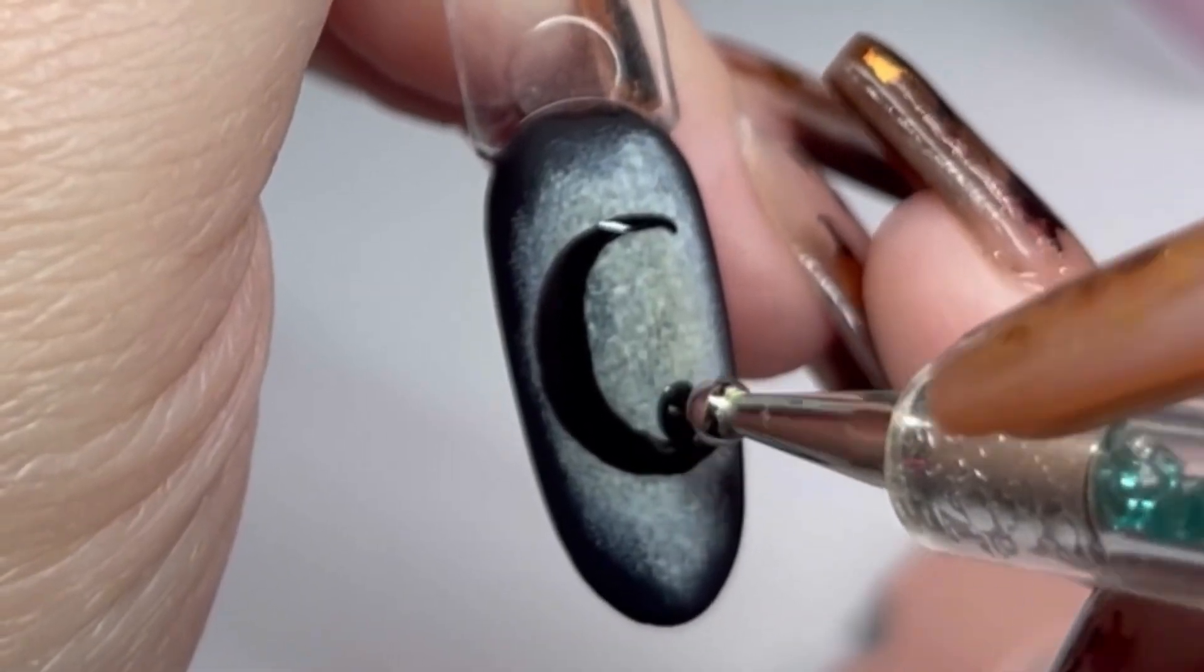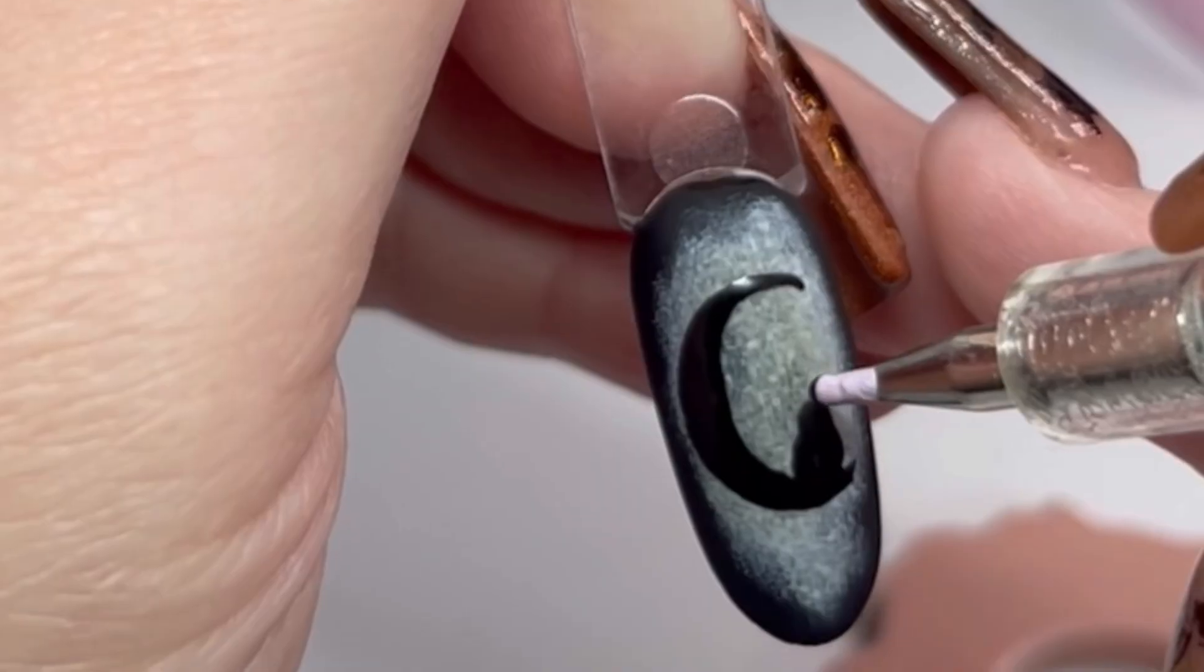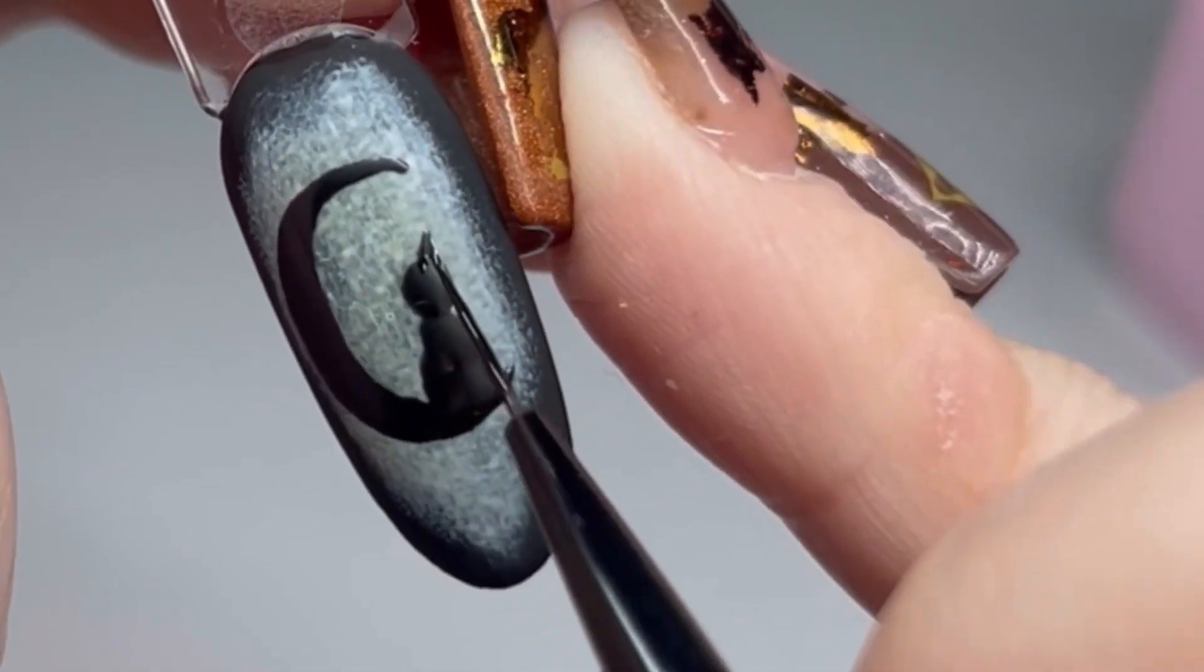Now I do cure this as I go along, especially when I'm working with black, and I like to make sure it's well cured. Even a flash cure will do. Then I'll use a dotting tool to create the cat and then I'll pop the little ears on.